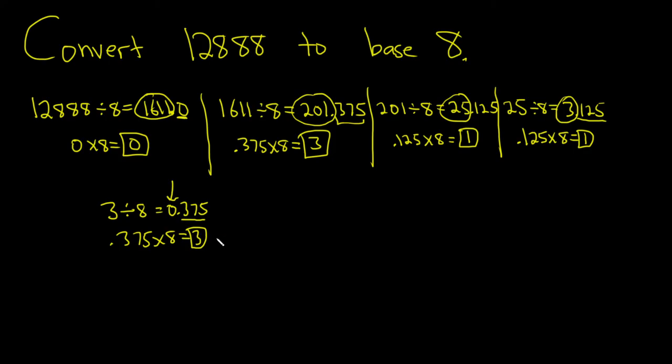So what's the answer? Well, you just write these backwards. So 3, 1, 1, 3, 0. Reading them backwards. 3, 1, 1, 3, 0. And then this is base 8.